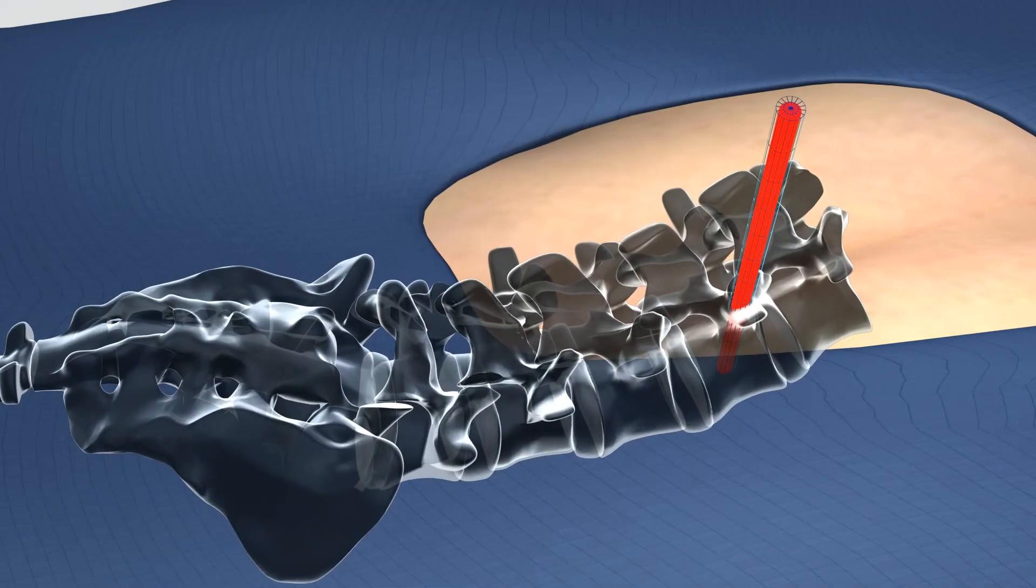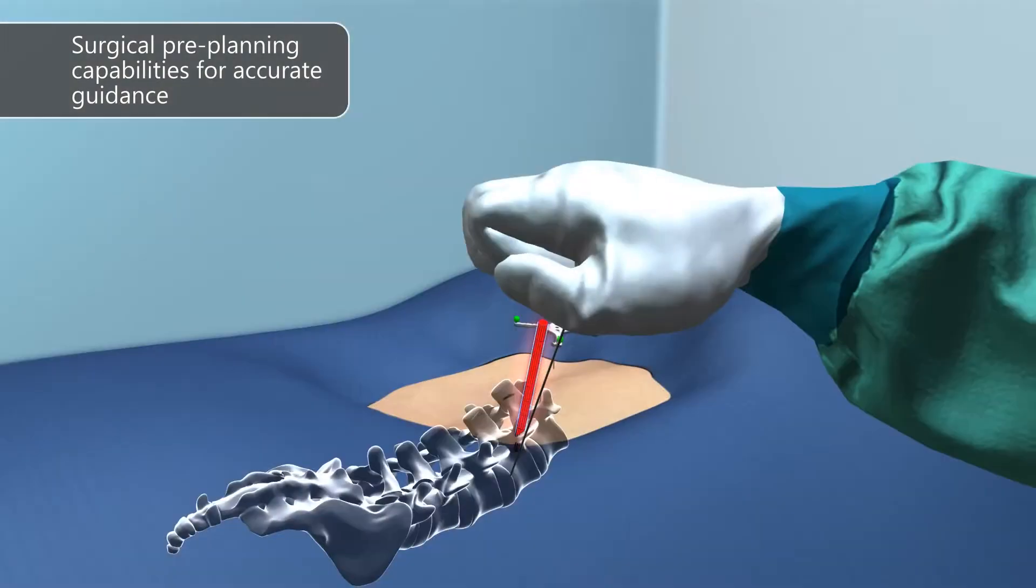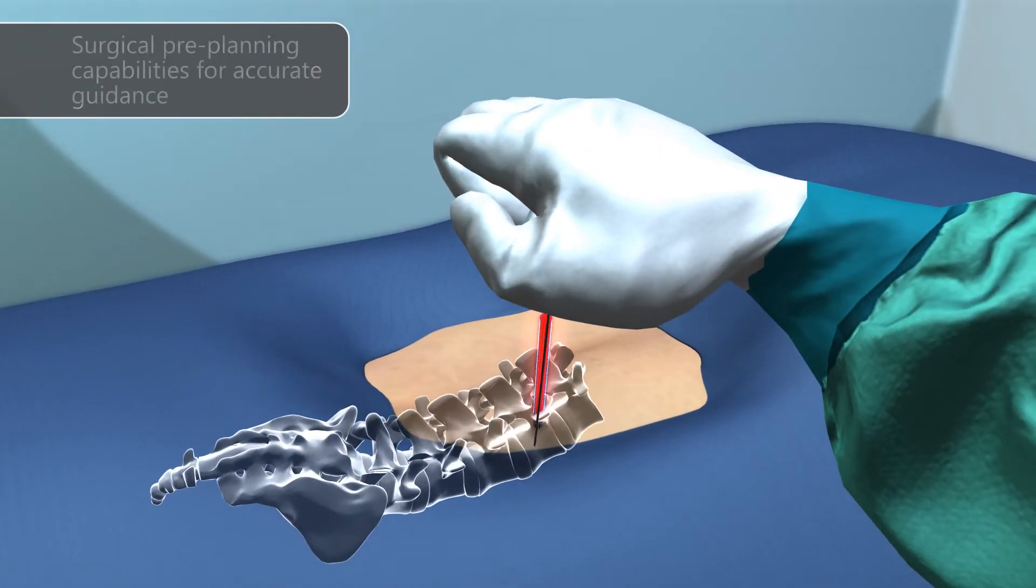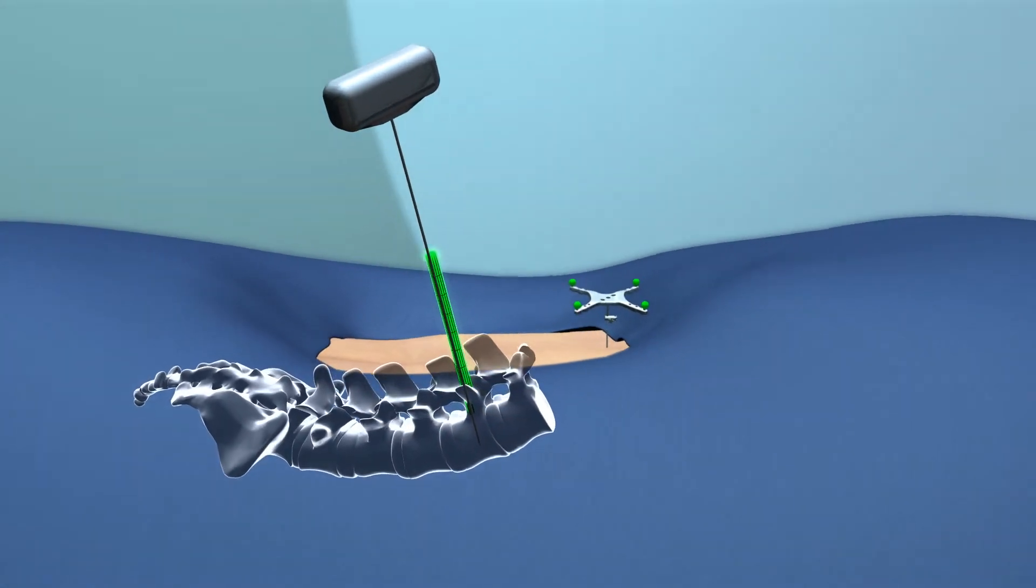The surgeon can also pre-plan the surgery by drawing a virtual guide for screw trajectory. To drill the hole for the screw, the surgeon places the instrument over the virtual guide and inserts it safely into the vertebrae to its correct position.